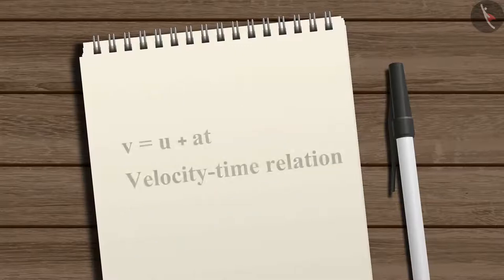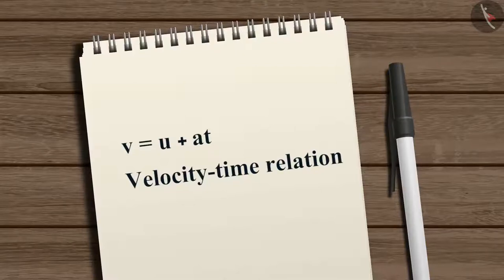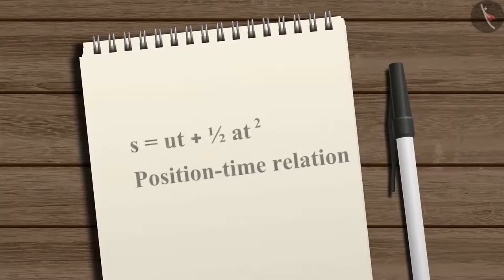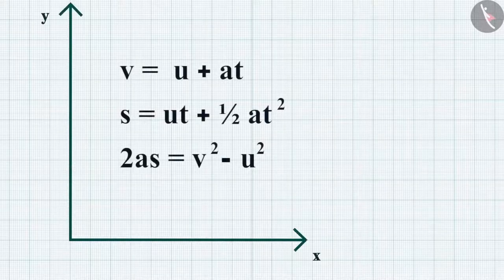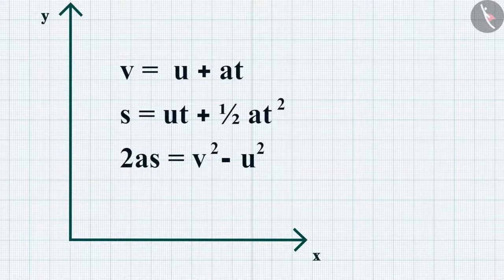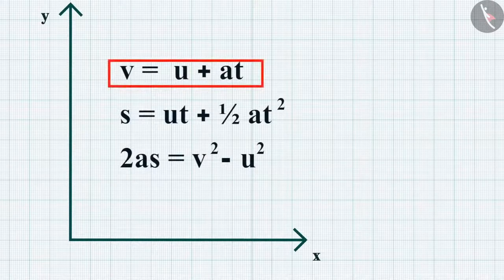The first equation v = u + at shows the velocity-time relation. The second equation s = ut + ½at² shows the position-time relation. The third equation 2as = v² - u² shows the relation between position and velocity. Now let's see how we can derive these equations of motion by graphical method.